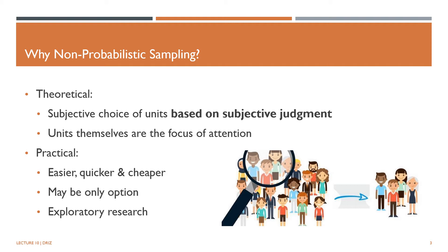Sometimes, non-probability sampling may be the only viable alternative that can be used. This would be the case with those populations that are hidden or hard to reach, where a list of the population simply does not exist. Non-probability sampling can also be particularly useful in exploratory research, where the aim is to find out if a problem or issue even exists in a quick and inexpensive way. Then the objective is to find units with problems to be researched.